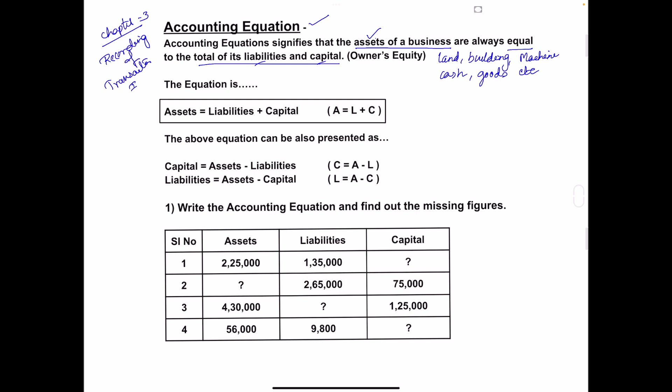The accounting equation states that assets of a business are always equal to the liabilities and capital of the organization. The short form of the accounting equation is A = L + C, where A is assets, L is liabilities, and C is capital.